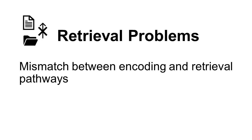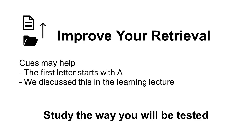Even with good encoding, sometimes we just can't access those memories. If there's a mismatch between how you encoded the information and how you need to retrieve it, it can be harder to remember. Say you had a short answer test but you studied for it like it was multiple choice — it'll be harder to retrieve information if you focused only on recognition rather than recall. It might help to have a cue, but really, you need to study the way you're going to be tested. When the encoding and retrieval pathways are similar, it'll be easier to access those memories.